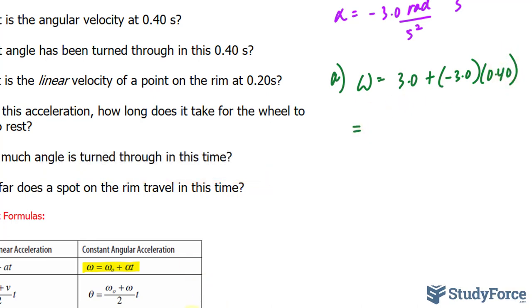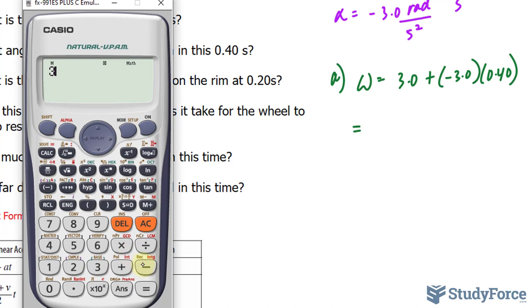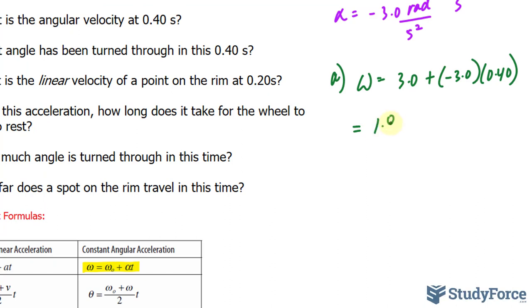Now, using our calculator, 3 minus 3 times 0.4 gives us a value of 1.8 radians per second. That's the answer for A.